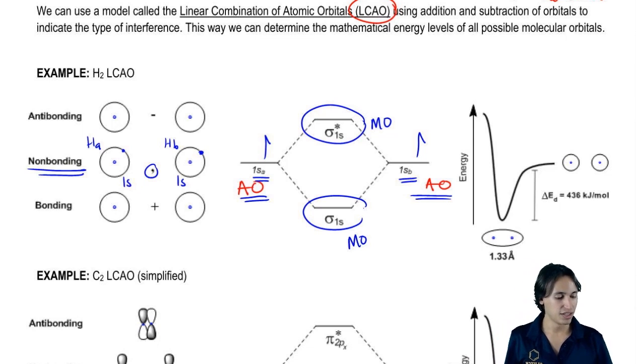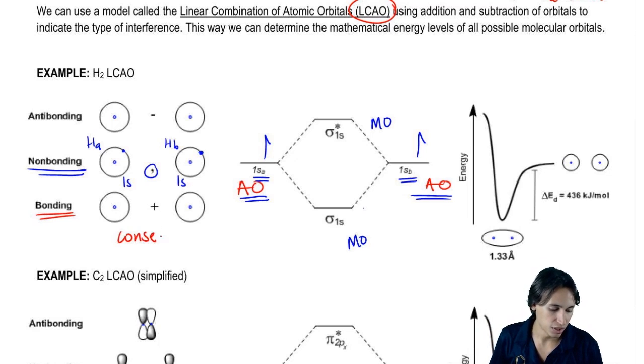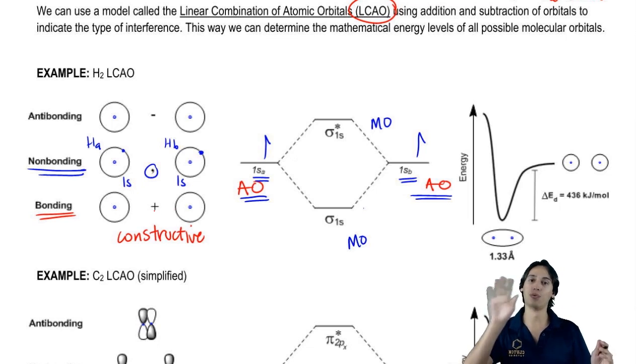Now remember that I said these orbitals in the middle, the molecular orbitals, have to do with how they're interfering. Let's talk about the easiest form of interfering first, which is bonding. Remember that bonding would be a constructive interference. Constructive interference can be represented by a plus, meaning that one orbital is adding to another orbital and making the chances of finding an electron there better.